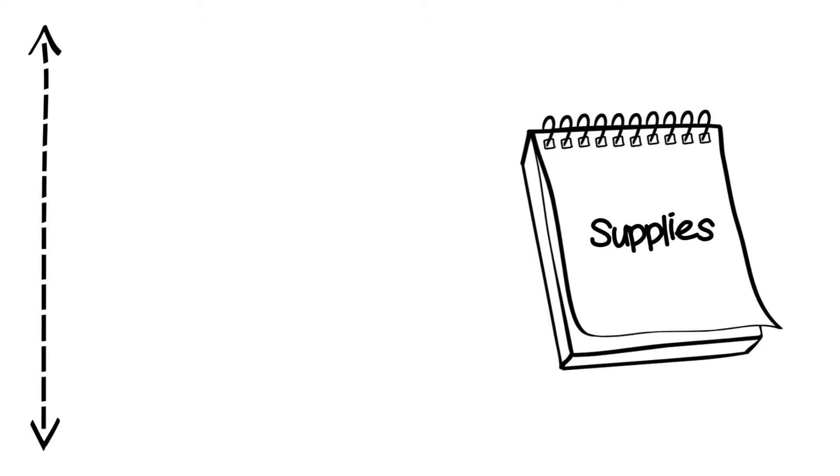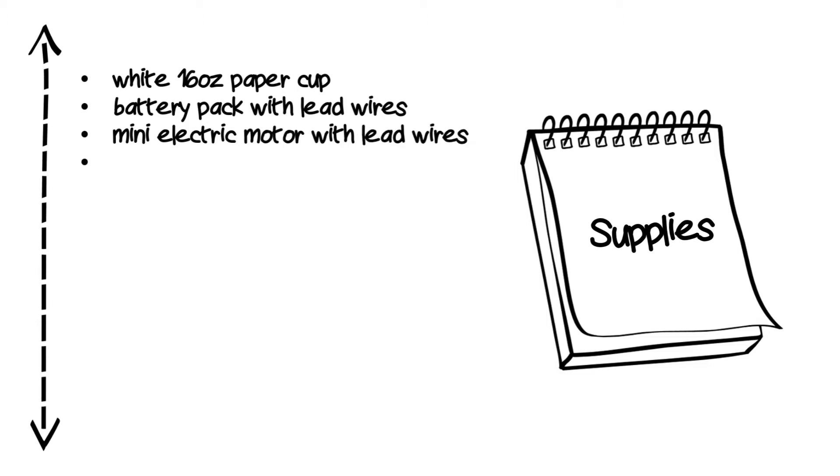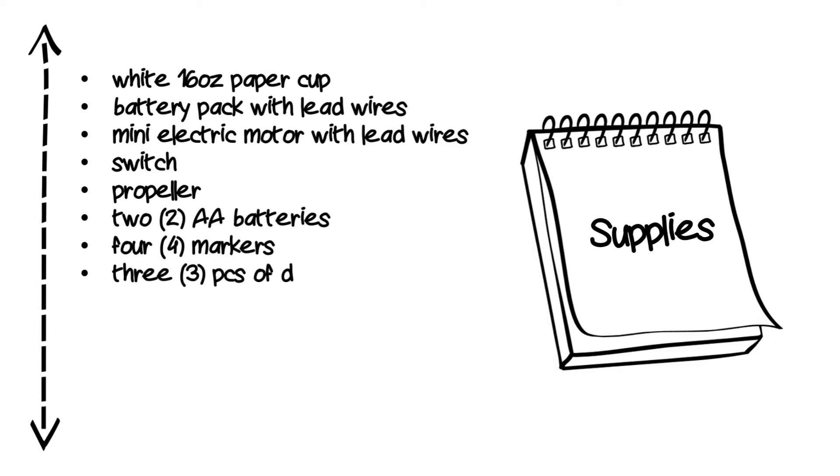Materials needed include one white 16 ounce paper cup, battery pack with lead wires, mini electric motor with lead wires, a switch, a propeller, two AA batteries, four markers of any colors, three pieces of double-sided tape, and one penny.